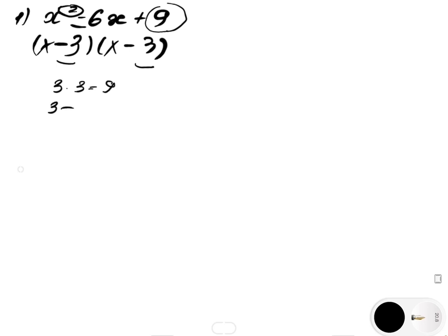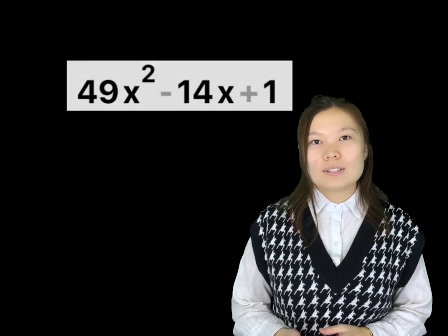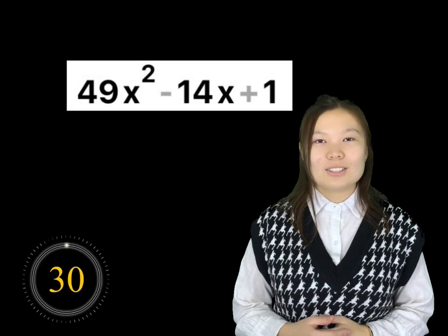Now let's check. Think of a number: the product is positive 9, and if you add them, the answer is negative 6. So that's our final answer. Now I give you an exercise — solve them in 30 seconds.